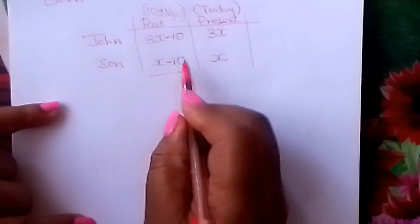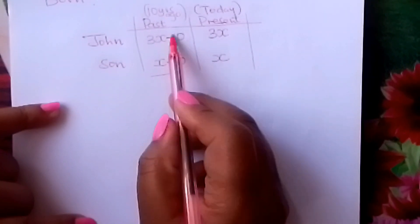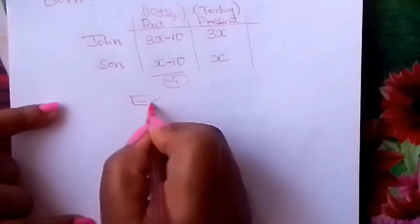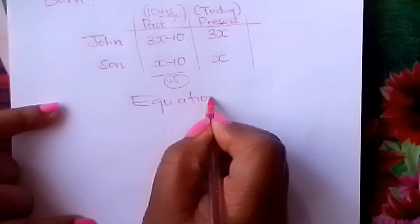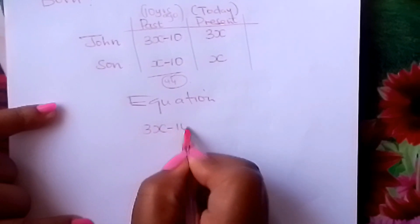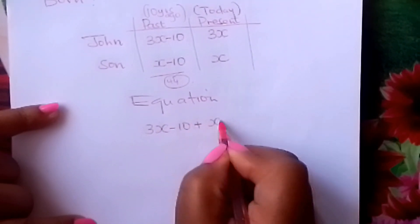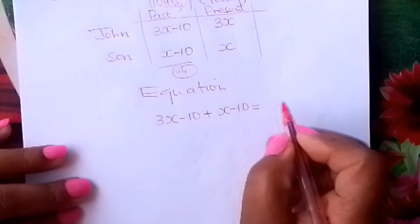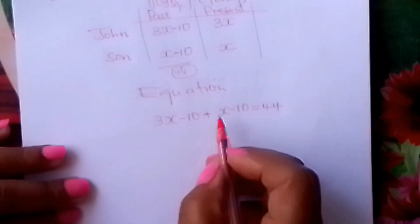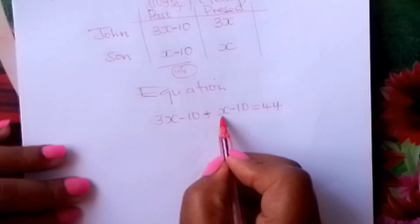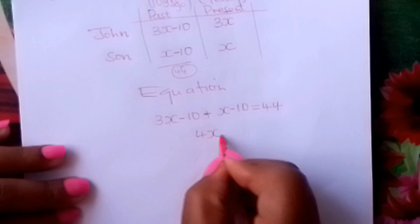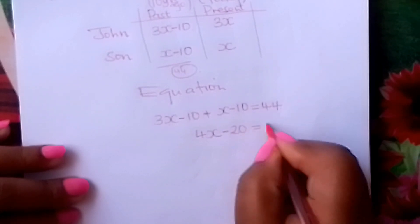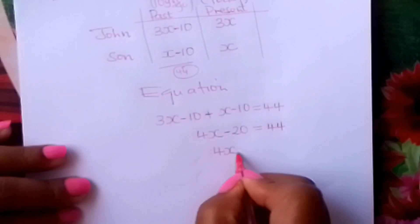You are told that the sum of their ages ten years ago adds to 44, so you form an equation: 3x minus 10 plus x minus 10 equals 44. Simplifying: 3x plus x gives 4x, and negative 10 minus 10 gives negative 20, so 4x minus 20 equals 44.